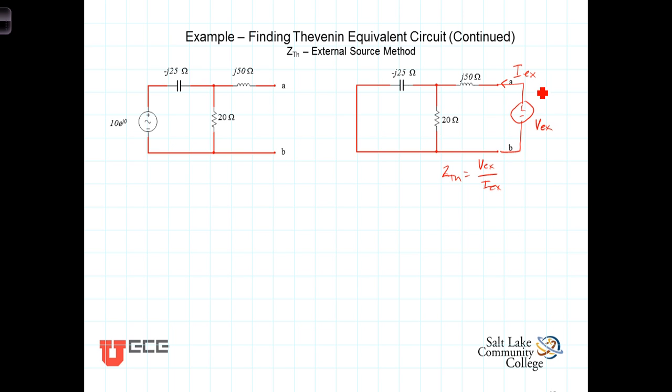Here's our circuit then. We've deactivated the source, we're applying the external voltage source, and we need to do some algebra and write some equations that will allow us to come up with a ratio of the external voltage to the external current. With the source deactivated, we see now that this 20 ohm and the negative J25 ohm capacitor are in parallel with each other.